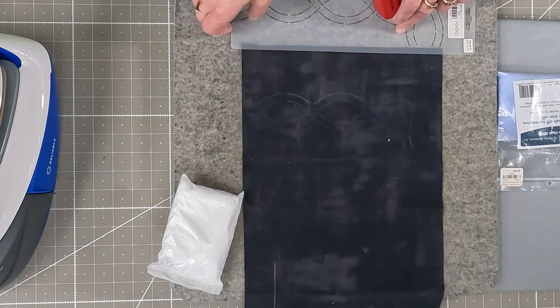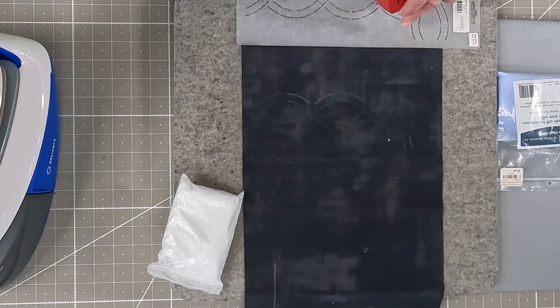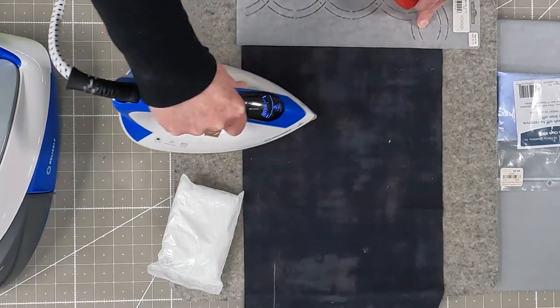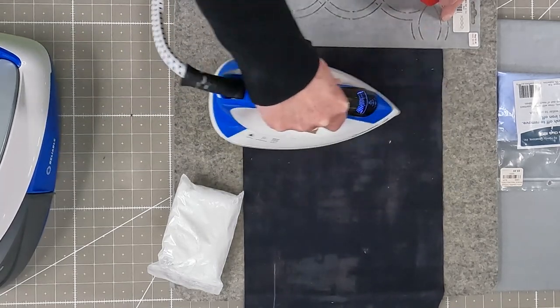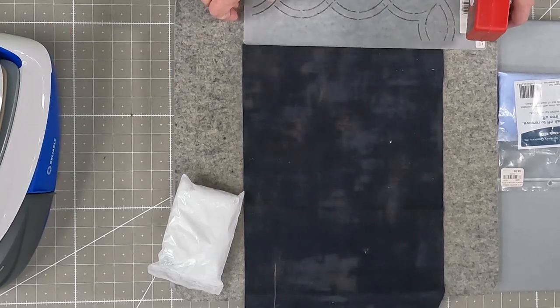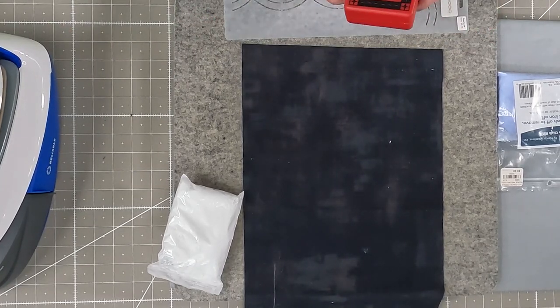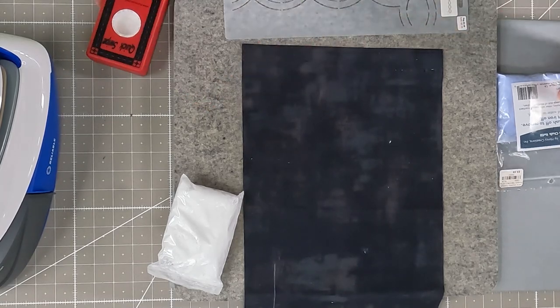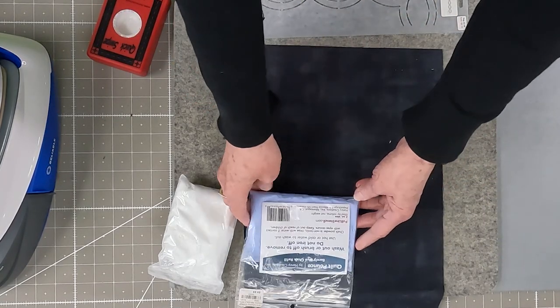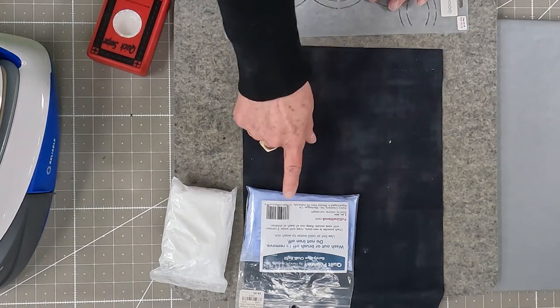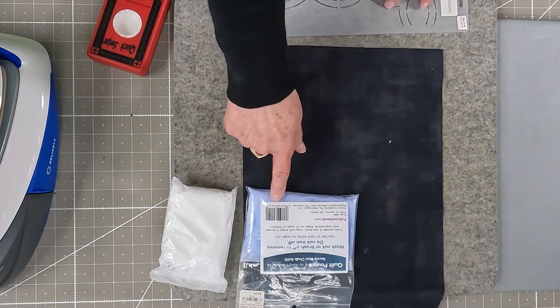Now this particular one is iron off. So once you're done, you can take your iron and iron it off. It likes steam. Now if you don't want it to disappear anytime soon, or you're not going to work on it soon, you might want to fill it up with the Do Not Iron Off Pounce. And you can tell the difference by the color. It's a lighter blue.